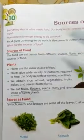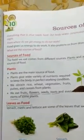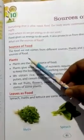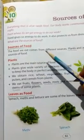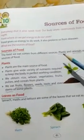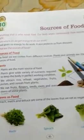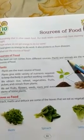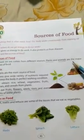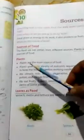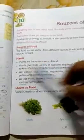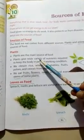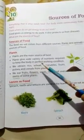There are two sources of food. The food we eat comes from different sources — plants and animals. These are the main sources of food. Plants and animals are the major sources of food. Now firstly, I will teach you about plants. Plants are the main sources of food.